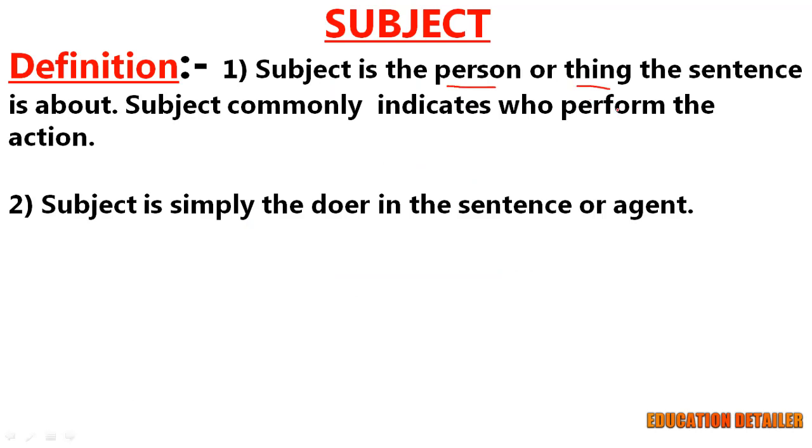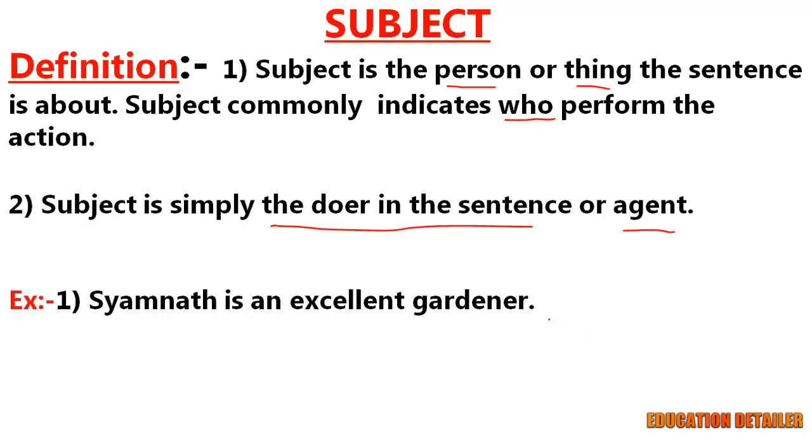Okay, let's begin with the definition. A subject is the person or thing the sentence is about. It commonly indicates who performed the action. Subject is simply the doer in the sentence, or you can say an agent. Look at the first example: Shamanath is an excellent gardener. This example is about whom? Shamanath.